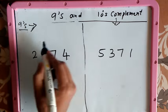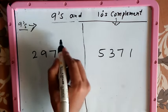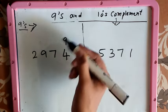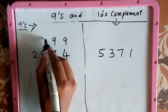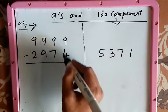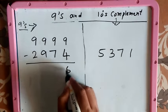To find out the 9's complement, the very first step is to write down for each digit 9 above each digit: 9, 9, 9, 9. Now subtract each digit with 9: 9 minus 4 is 5, 9 minus 7 is 2, 9 minus 9 is 0, 9 minus 2 is 7.